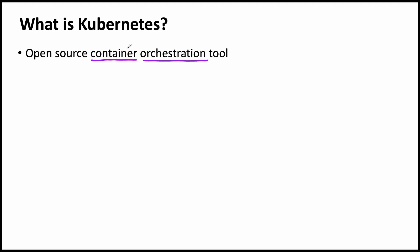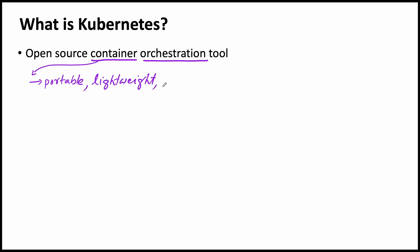First, we will look at these two words: container and orchestration. What is a container? If you are trying to learn more about Kubernetes, I'm sure you already know what a container is. But I will try to explain in very simple words what a container is, because we need to understand what is a container to understand what is container orchestration. A container is a portable, lightweight, standalone computing instance.